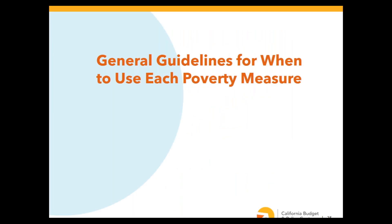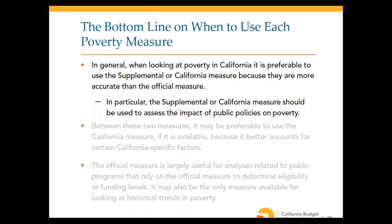Moving to practical guidelines: when looking at poverty in California, it is generally better to use the supplemental or California poverty measure because they are more accurate than the official measure — they address widely-understood shortcomings of the official measure. In particular, the supplemental or California measure should be used to assess the impact of public policies on poverty, since many policies intended to address economic insecurity involve non-cash resources like food assistance, housing assistance, or tax credits.